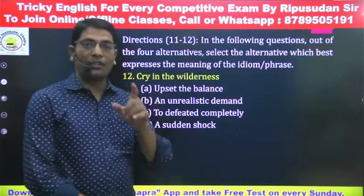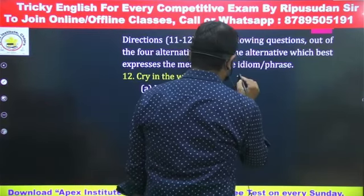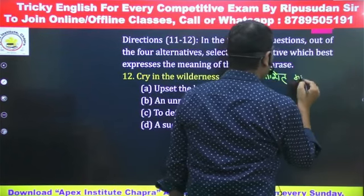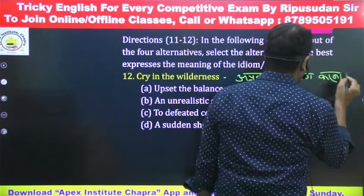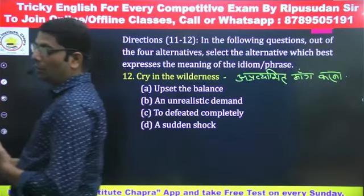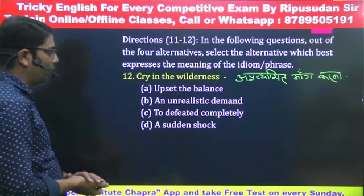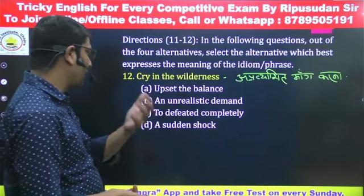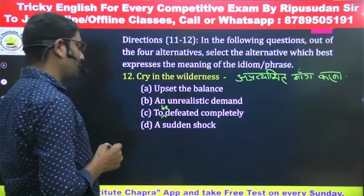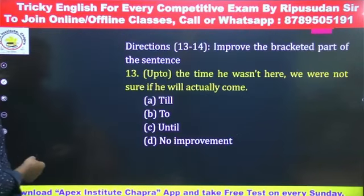Question number 12: 'Cry in the wilderness' — किसी ऐसी चीज़ की माँग कर देना जिसको पूरा करना संभव न हो, अप्रिय भी लगे। Options: upset the balance (संतुलन बिगाड़ना), an unrealistic demand (ऐसी demand जो realistic न हो), to be defeated, a sudden shock। Q12 का answer होगा 'an unrealistic demand'।